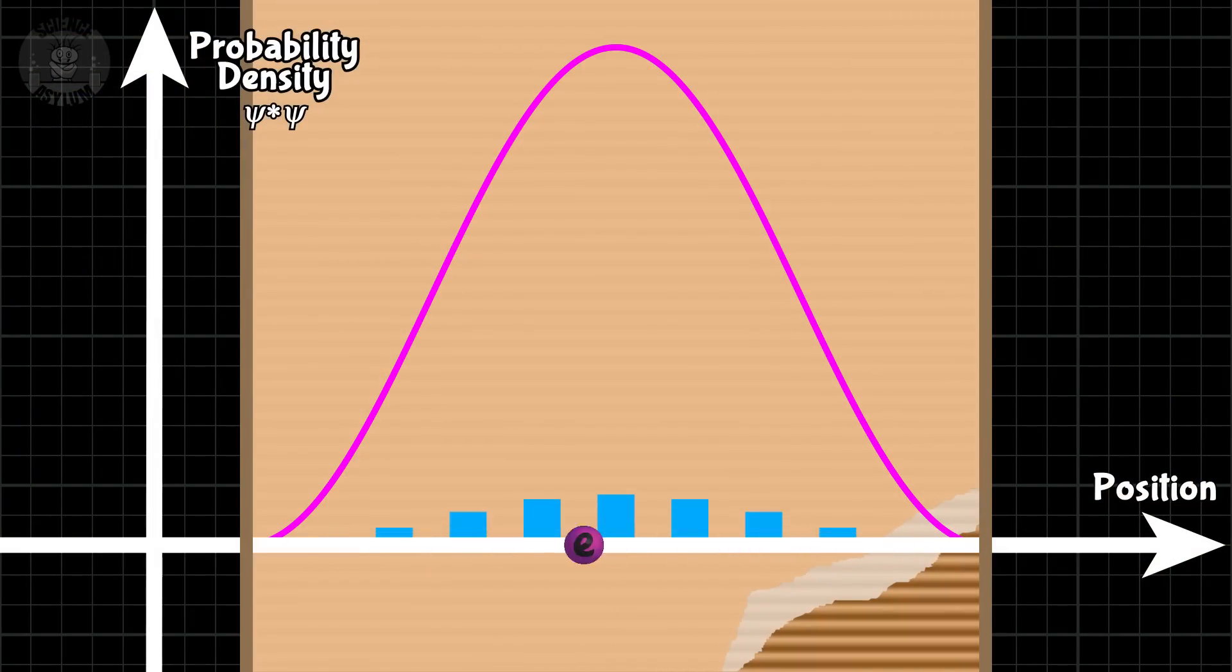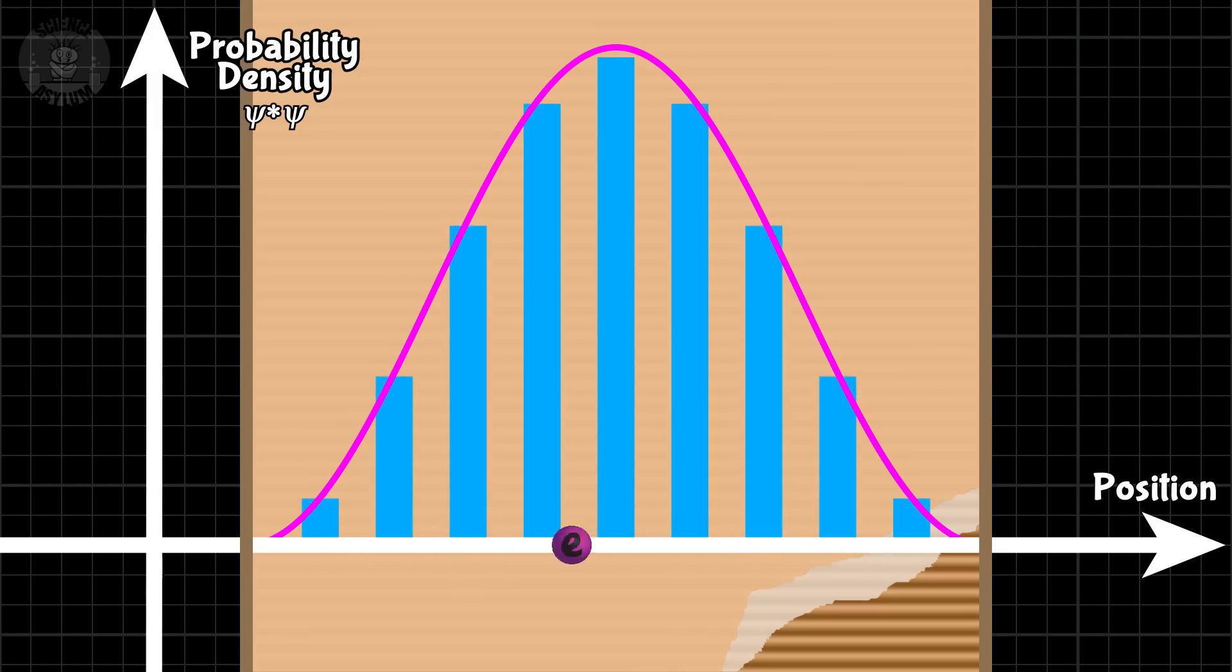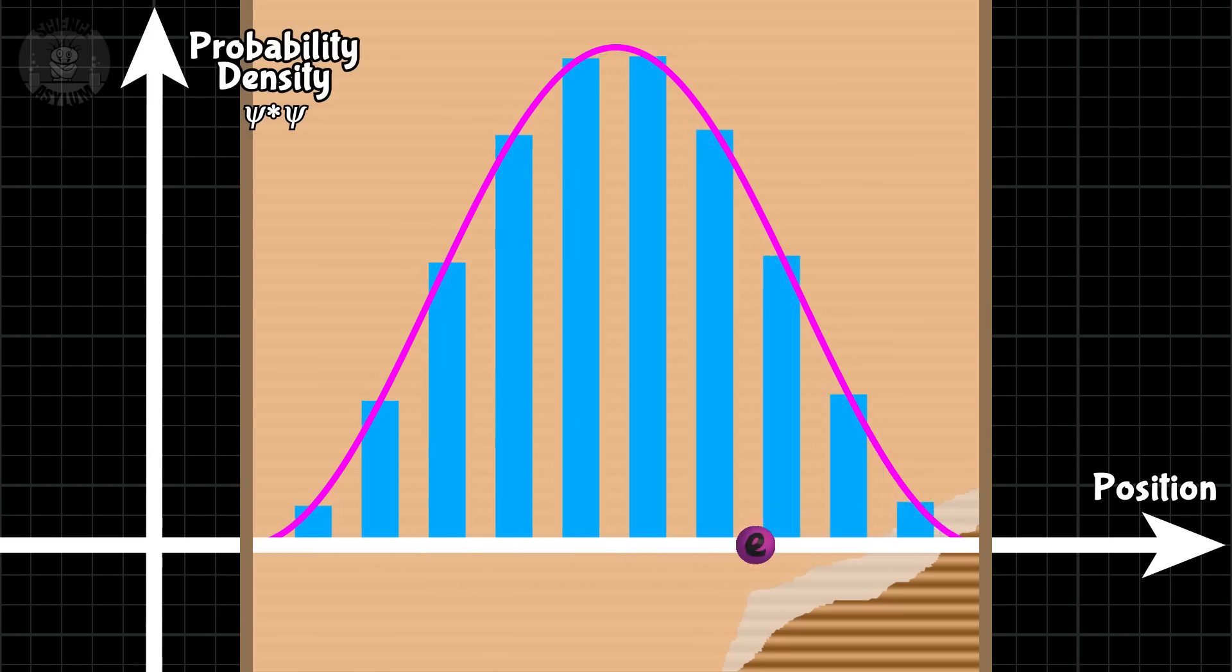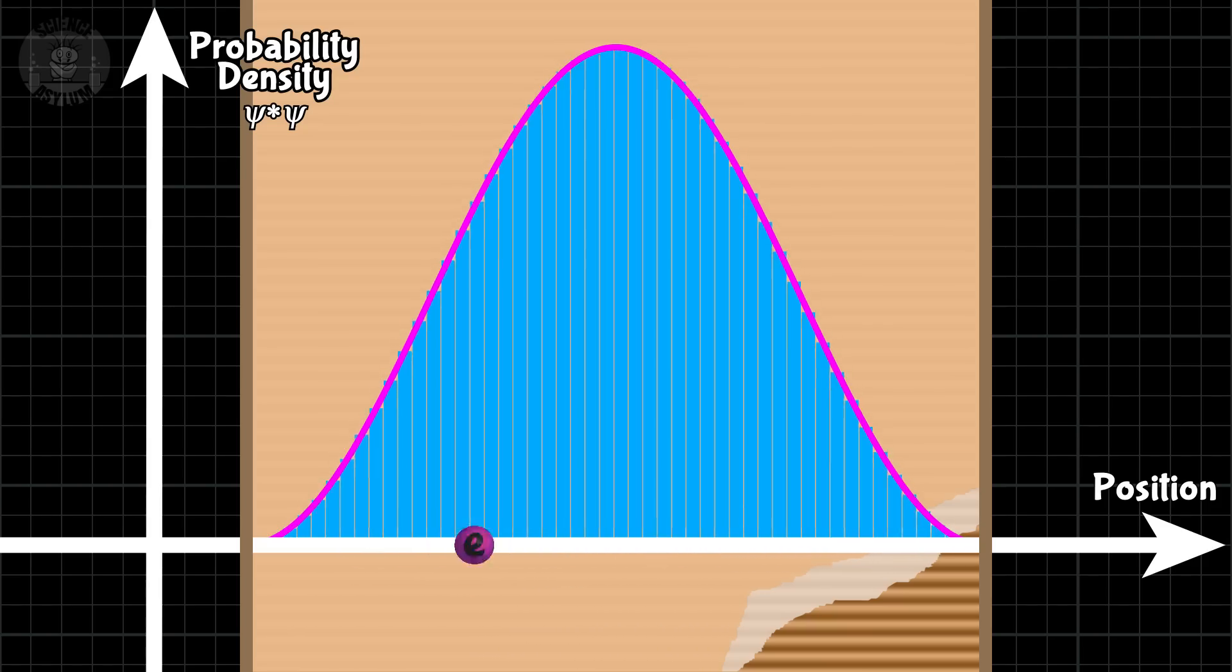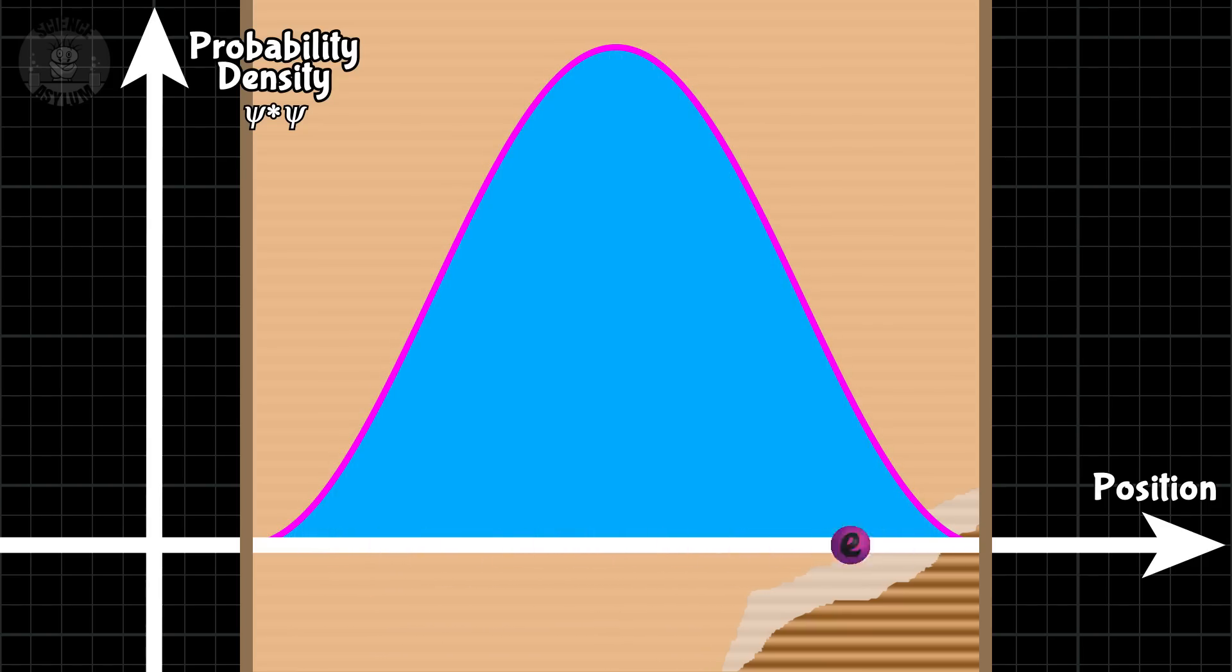It's best to think of it like a bunch of separate numbers along the box. The height of each of these bars is the probability density at that location. There are a lot of possible locations for this particle though, so there are a lot of vertical bars. So many, in fact, that it all just looks like a shaded area.